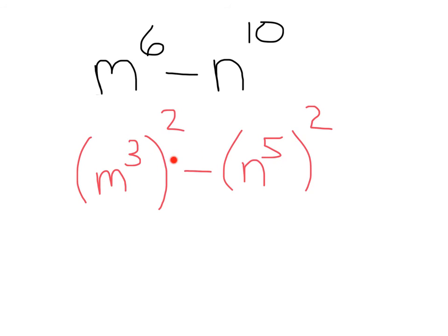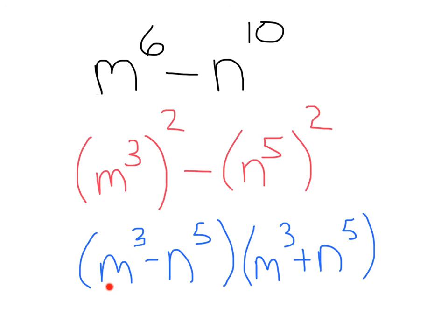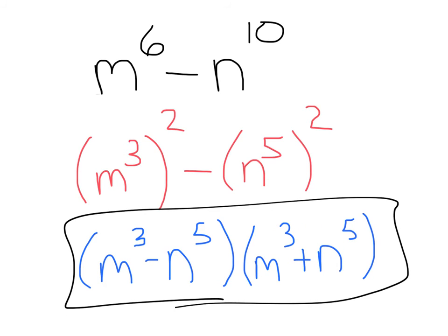Now that we have our squares, m cubed and n to the 5th, we can factor just like before. m cubed minus n to the 5th times m cubed plus n to the 5th. And we factored it.